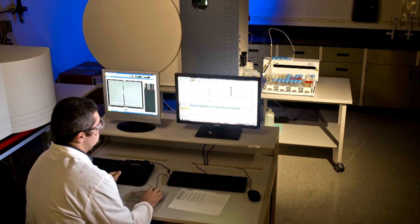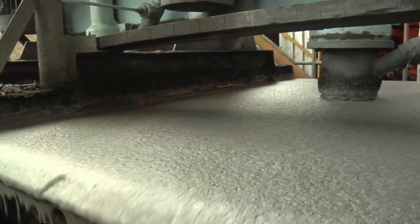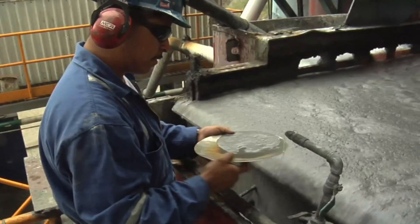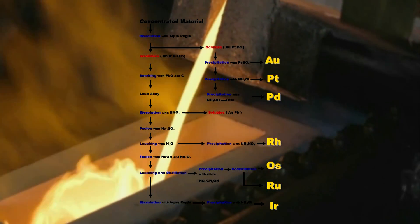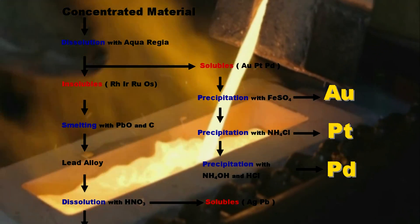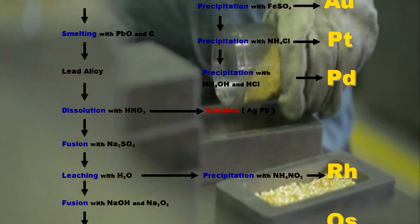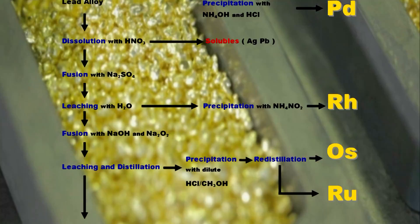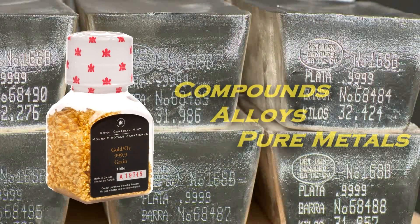Refining processes employ a series of steps using mechanical and chemical extraction and concentration methods. Each step serves to separate, concentrate, or transform states. In essence, the precious metals, like building blocks, are transformed in steps by connecting with other building blocks and then taking them apart until the resulting products are pure precious metals.